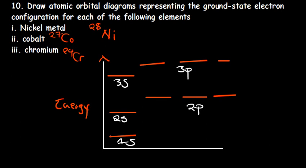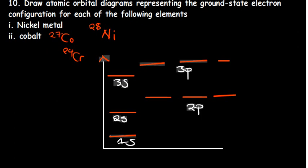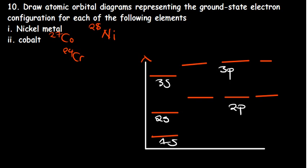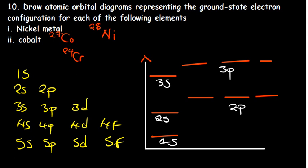The best approach is to first come up with the electron configuration before drawing the diagram. Use the filling order: 1s, 2s, 2p, 3s, 3p, 3d, 4s, 4p, 4d, 4f, 5s, 5p, 5d, 5f — we'll end there for now.